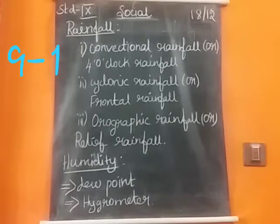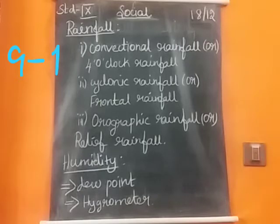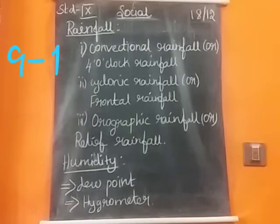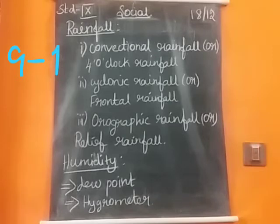Rainfall is the most prominent type of precipitation — it is one of the types of precipitation. Moisture-laden air masses rise upwards, form clouds, and bring rainfall. So moisture-laden air is converted into rainfall.